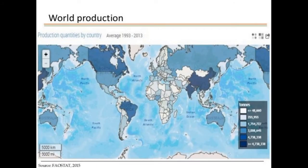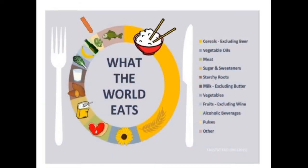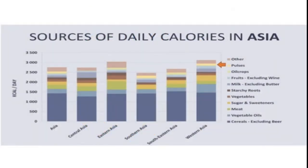When looking at production worldwide, pulses are grown in every part of the world and production in India is quite high. Pulses are a major part of the diet everywhere in the world. Looking at the bar graph of sources of daily calories in Asia, pulses are a great and major source of daily calories across all Asian countries.